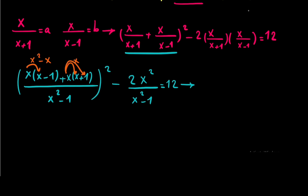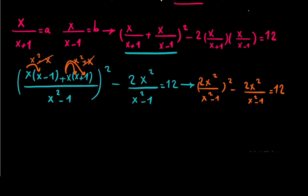Here we can write x squared minus x and x squared plus x. If we cancel the x and negative x, we get 2x squared over (x²-1), all squared, minus 2x squared over (x²-1), equals 12. Now I'll use a substitution — let t equal 2x squared over x squared minus 1.